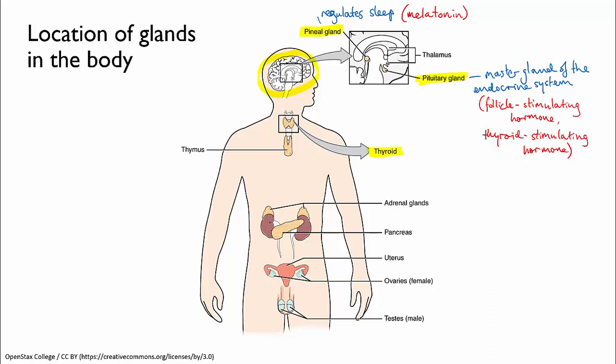The thyroid is a butterfly-shaped gland, and it's located near the base of your throat. It produces a crucial hormone called thyroxine, which controls many functions in the body, including growth and metabolism, and keeping your body the right temperature.